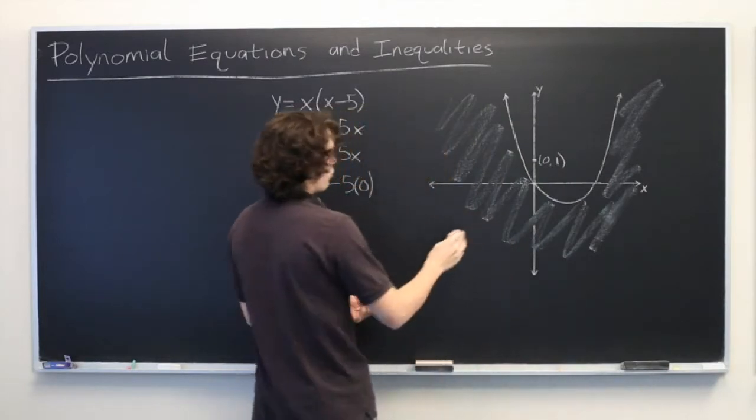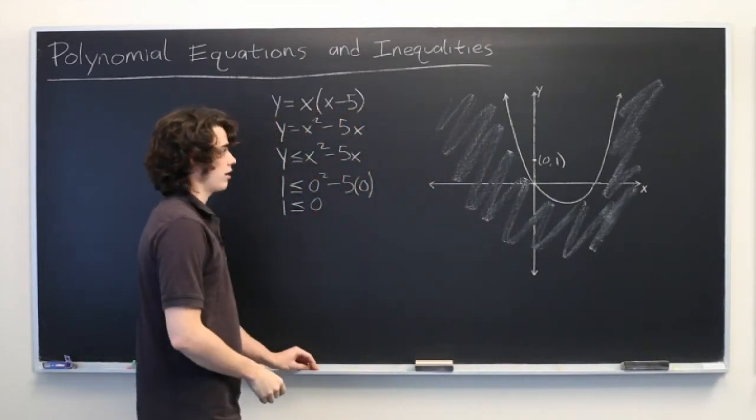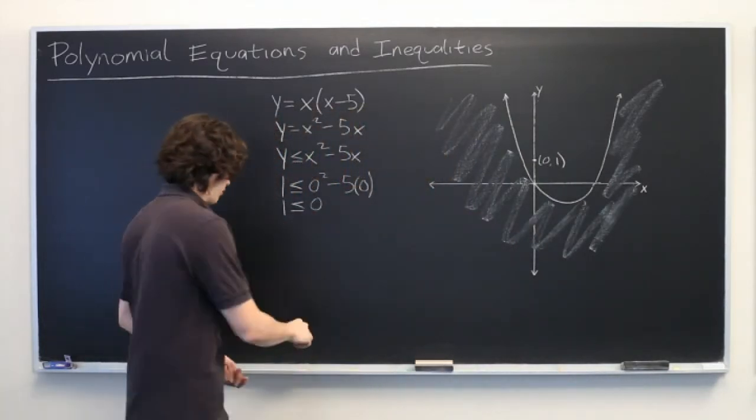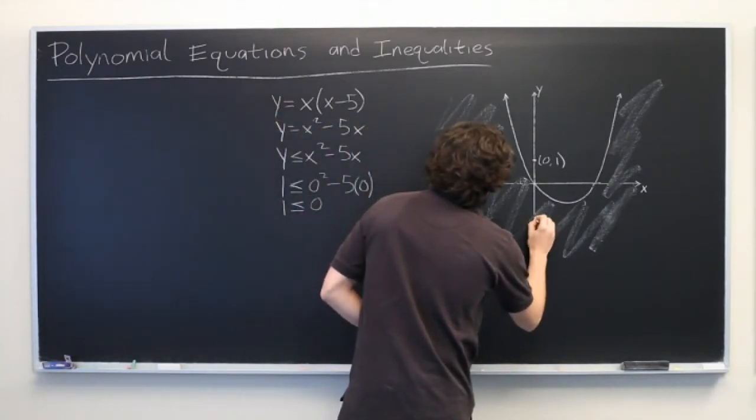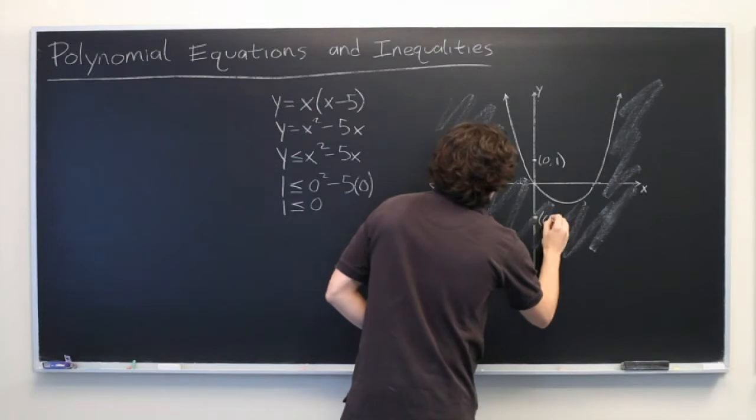In fact, we can test that we've shaded the correct side by picking another test point on the opposite side of the curve. We'll do the same thing for 0, negative 1.